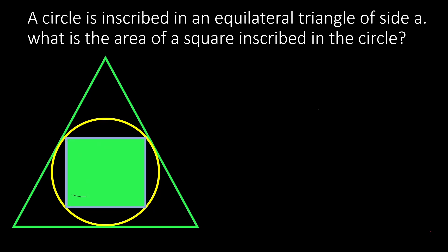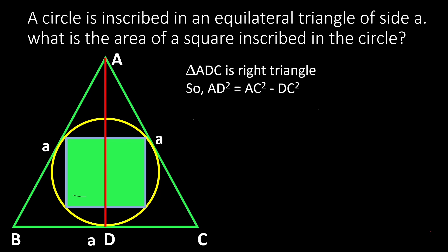How do we find the area of the square? This is the triangle ABC, which is an equilateral triangle of side A — its side is A units. Now let us draw the median AD of this triangle. Now ADC is a right-angle triangle.